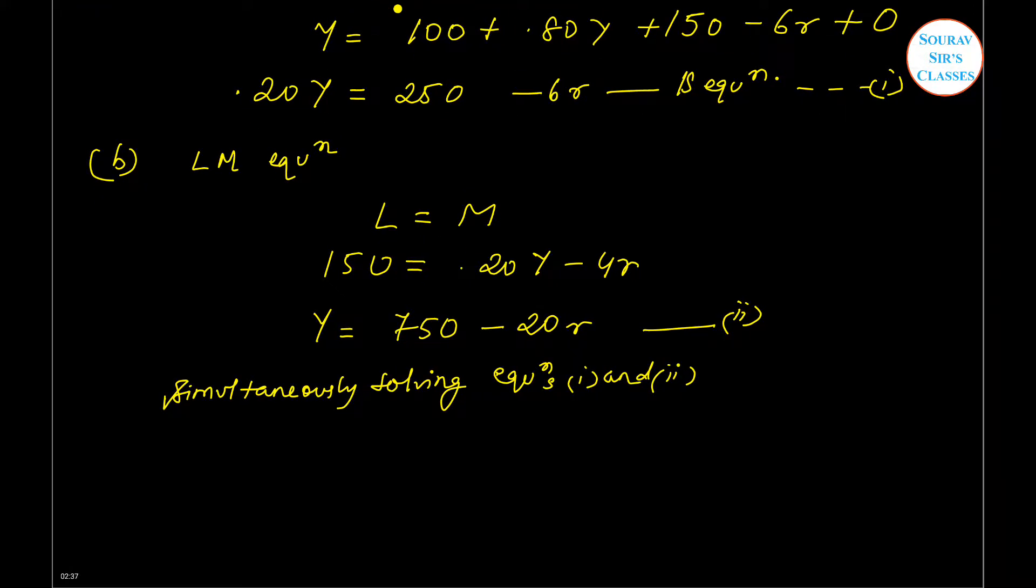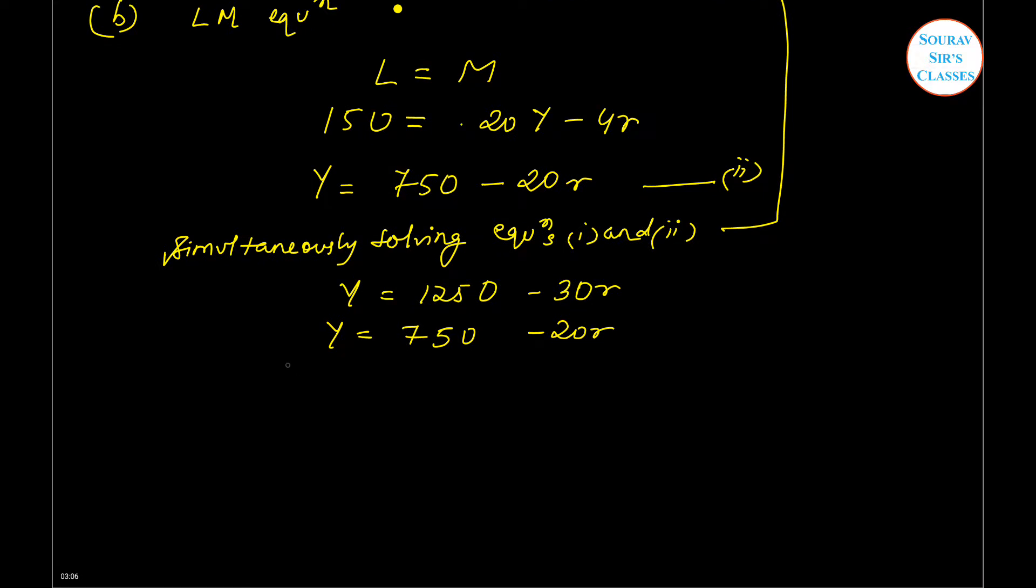I am rewriting this, so let's say Y equals 1250 minus 30r, and I'm equating these two. So it will be Y equals 1250 minus 30r, and then Y equals 750 minus 20r. So now let us do something: minus minus plus, so this will cancel out.